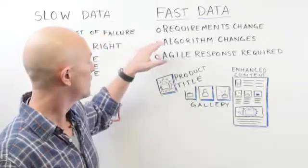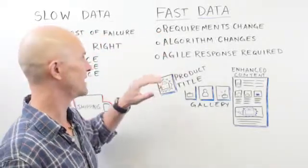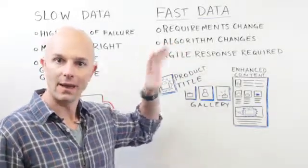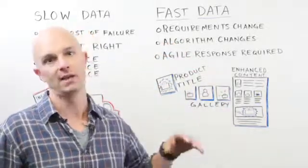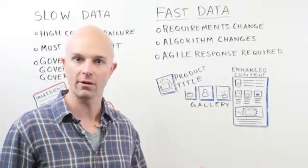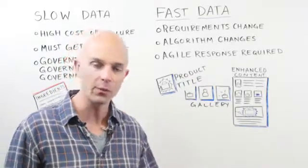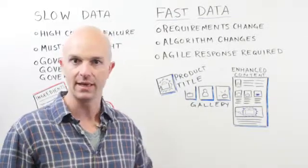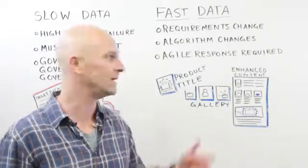So the requirements change all the time with fast data. Also the algorithms change all the time. Amazon's and Walmart's and Google's and Grainger's search algorithms are constantly being tweaked for higher conversion rate. Your product that's performing really well this week could perform really badly next week. And the only way to address that is to update your product content to meet the new algorithms.